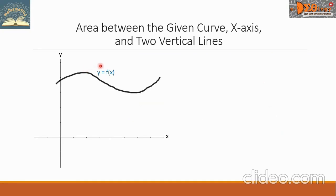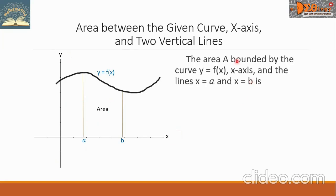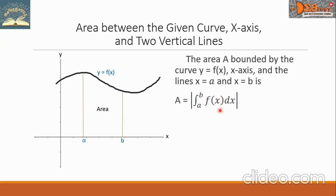Here we have a function y equals f of x, represented by a graph on the rectangular coordinate system, with the x-axis and y-axis. We have two vertical lines that pass through a and b respectively. The area A bounded by the curve y equals f of x, the x-axis, and the lines x equals a and x equals b is given by: A equals the absolute value of the definite integral from a to b of f of x dx.